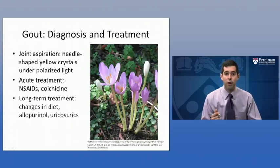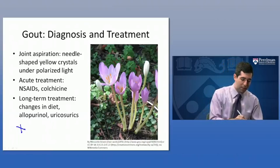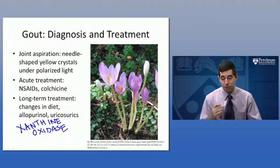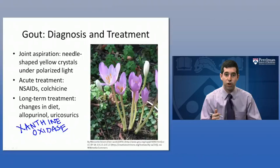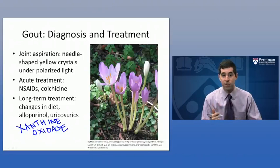The long-term treatment of gout primarily focuses on changes in diet based on those dietary triggers. Allopurinol — a xanthine oxidase inhibitor — inhibits xanthine oxidase, the enzyme that creates uric acid from those nucleotides, thereby preventing uric acid production. Uricosuric medications like probenecid help reduce the amount of uric acid in the blood by promoting its excretion into the urine, but they do carry the risk of producing kidney stones, as increasing uric acid in the urine can cause it to precipitate and form stones.